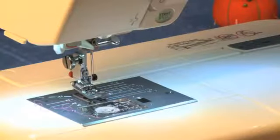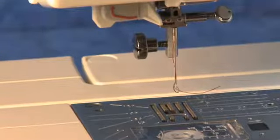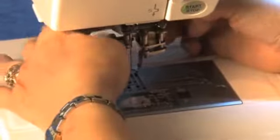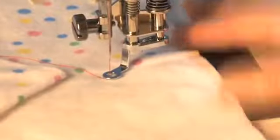To install the foot on your machine, loosen the presser foot screw and remove the existing foot and ankle on your machine. Attach the Free Motion Quilt Foot to the machine and tighten the screw. Lower the feed dog.